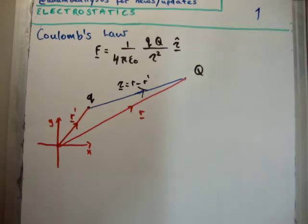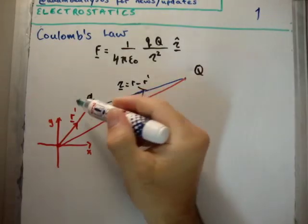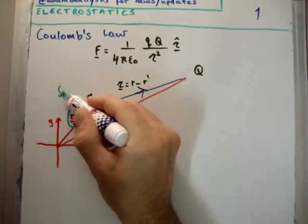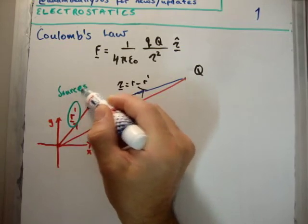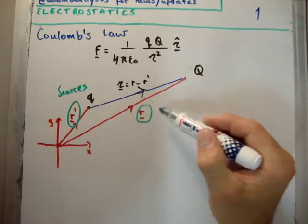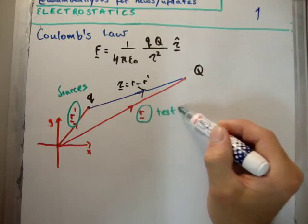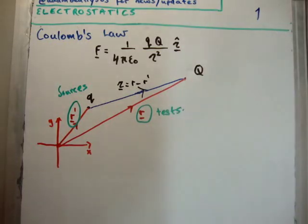Now before we continue, you need, if you're looking at my videos at the very least, to note that when I'm talking about primed variables, we're talking about sources. And unprimed variables, we're talking about tests. It's very important, so it's R minus R prime.